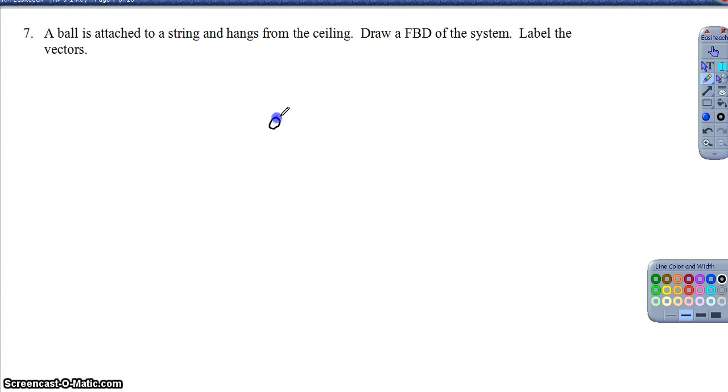Okay, so for part 2 of homework 3-1, we'll start off with question 7 and hopefully get all the way through question 10. So a ball is attached to a string that hangs from the ceiling. Draw a free body diagram of the system and label the vectors.